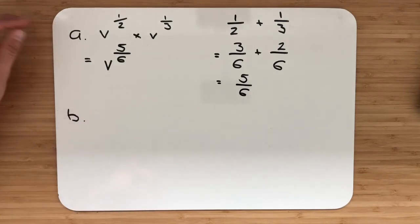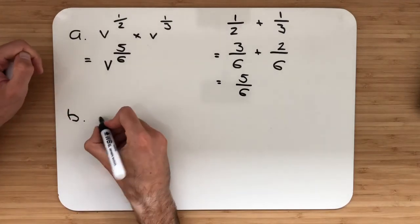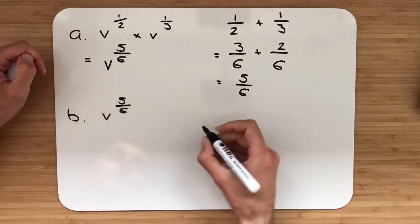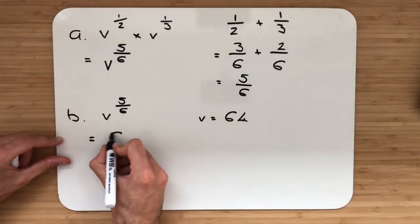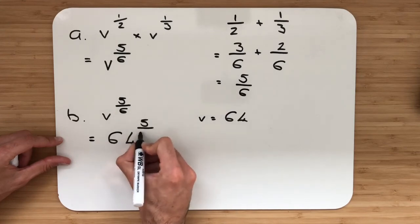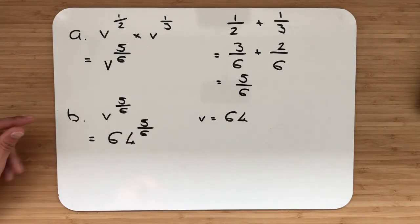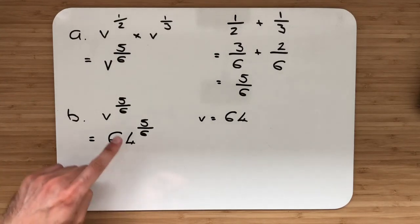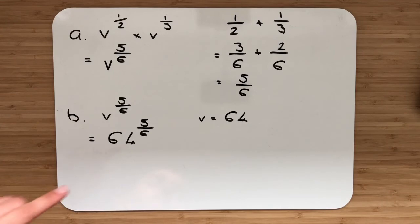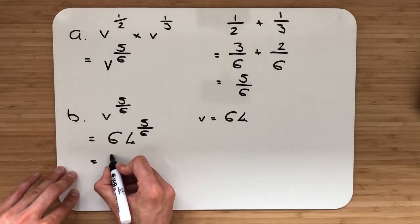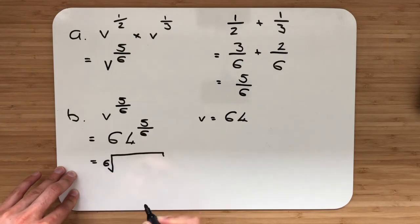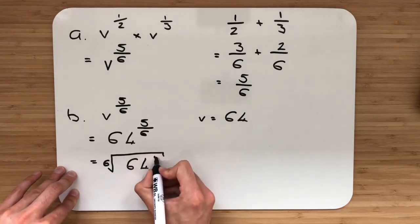Part B: hence evaluate when v equals 64. The word 'hence' tells us to use our answer from above. So we substitute to get 64 to the power of five sixths. To evaluate that, we change it back into a root: the top number of the fraction stays as the power, and the bottom number strays to the outside of the root sign, giving us the sixth root of 64 to the power of 5.